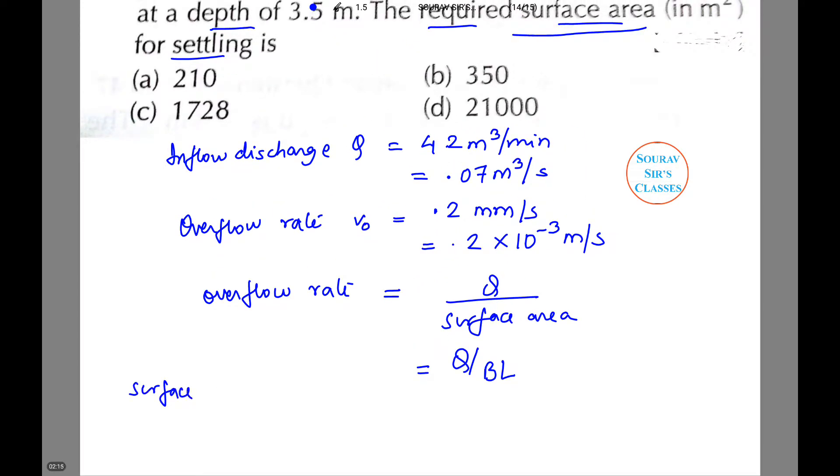This is equal to 0.07, and we will substitute the value of V naught here.